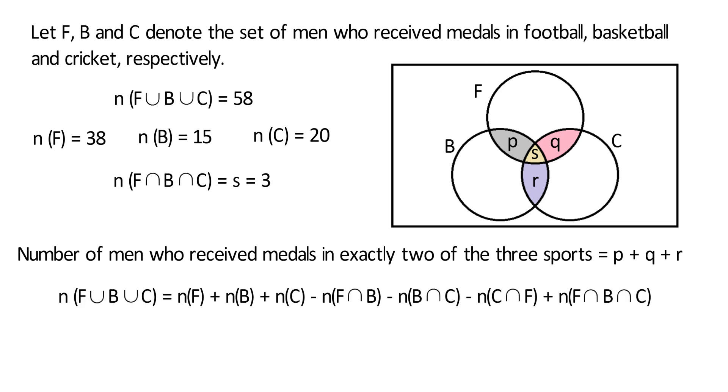The number of elements in F intersection B are P plus S, the number of elements in B intersection C are R plus S, and the number of elements in C intersection F are Q plus S. Now we substitute the value of other remaining terms.